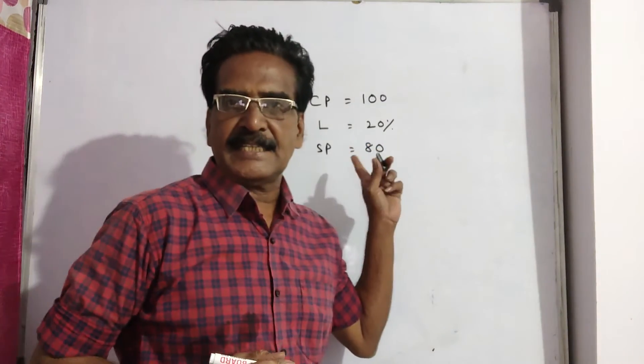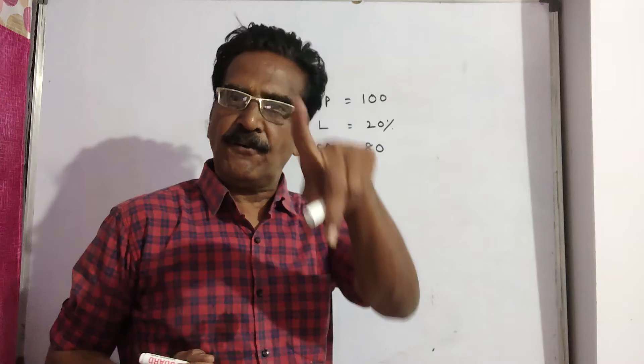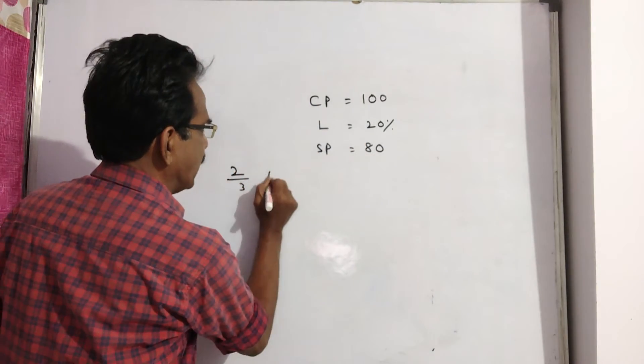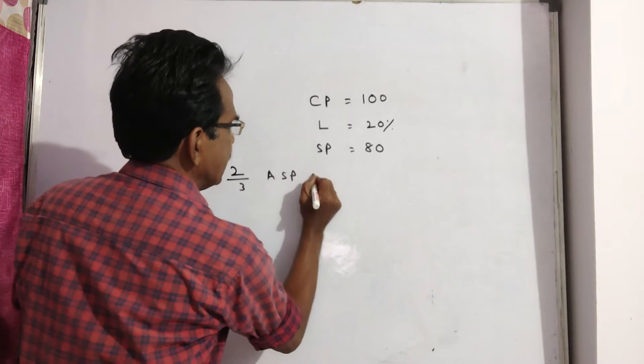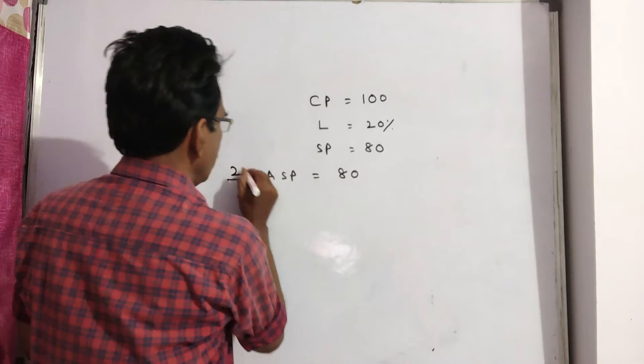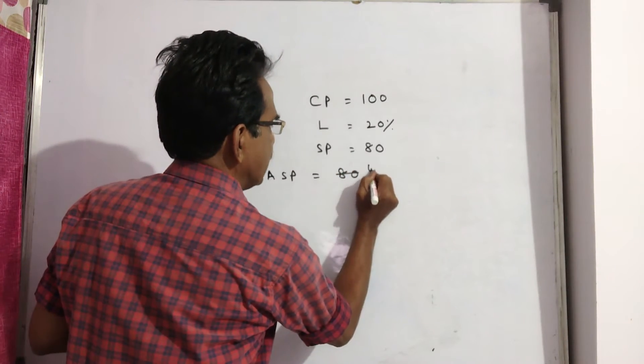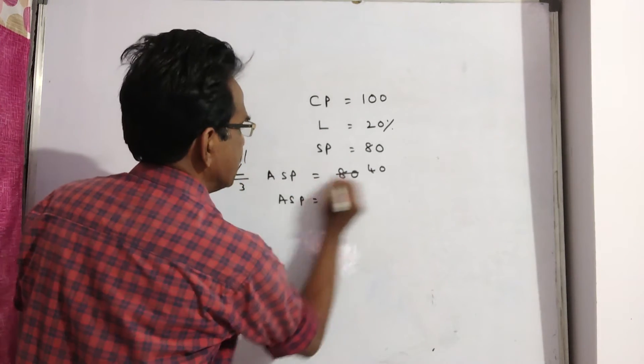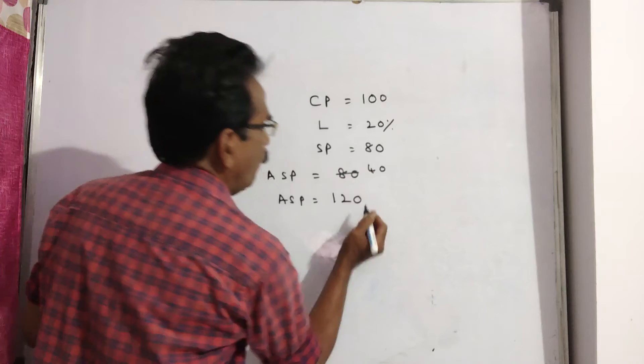This 80 is two-third of actual selling price. So two-third of actual selling price is equal to 80. Two ones, two forties. So actual selling price is equal to 120.